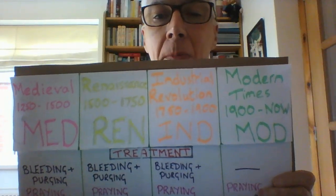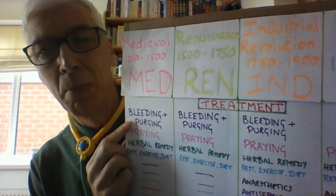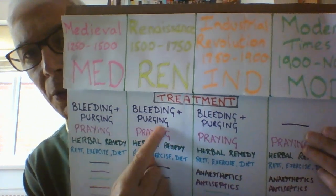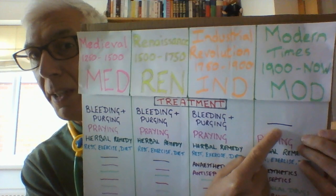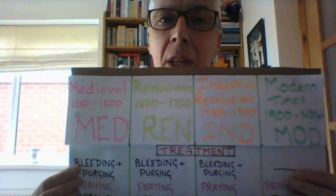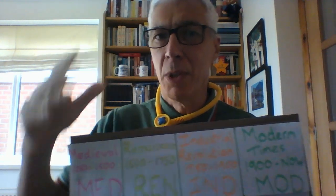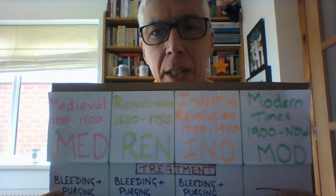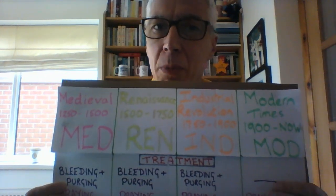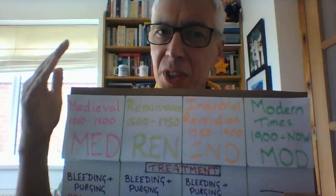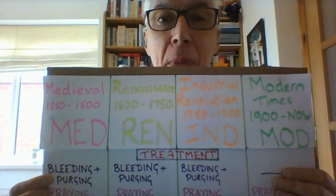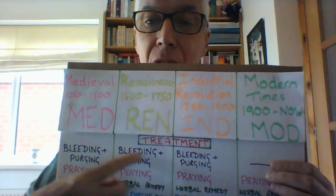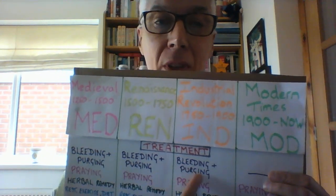The first treatment: bleeding and purging. It's used in medieval times, in renaissance times, and into part of the industrial revolution. We don't really use it much today, although we do use leeches occasionally. Why would they bleed a patient or give them chemicals to make them vomit and purge? Huge bonus points if you linked it to the four humours. Because they believed the four humours was a cause of disease, the treatment addressed that cause. And because the four humours was wrong, bleeding and purging was probably wrong. Notice there is not much change for a long, long time because they still believed in the four humours.